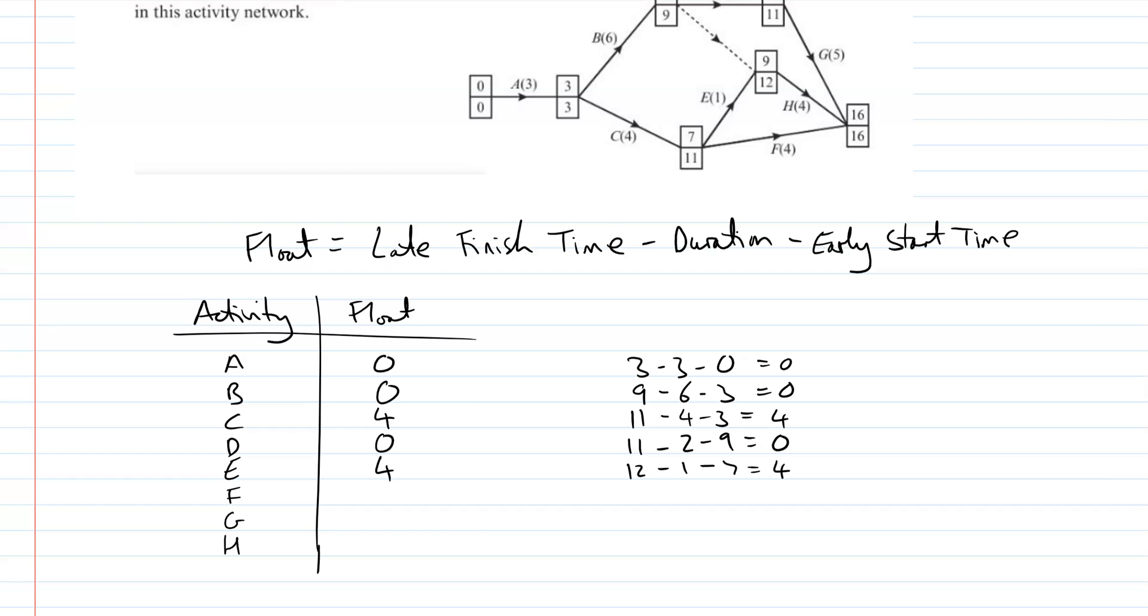F. So for F, we've got the 16 minus four minus seven. So it's actually got a float of five days, or hours, whatever it is in the question.